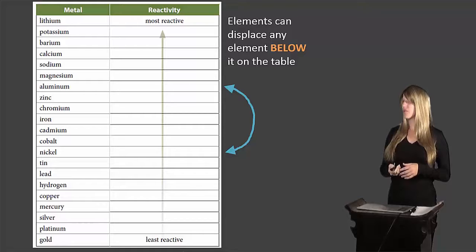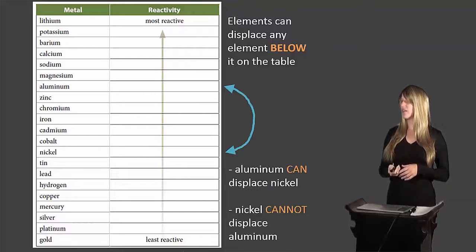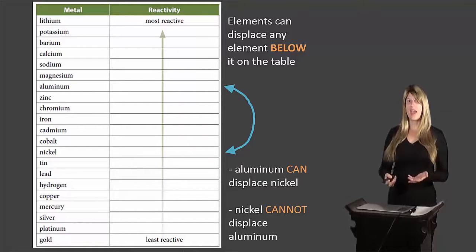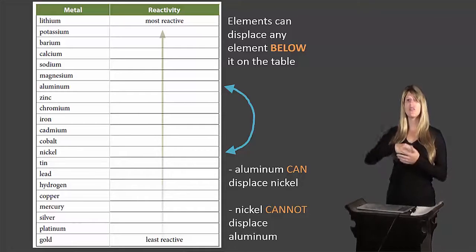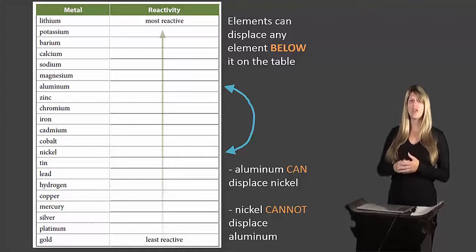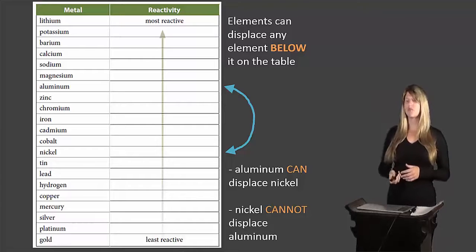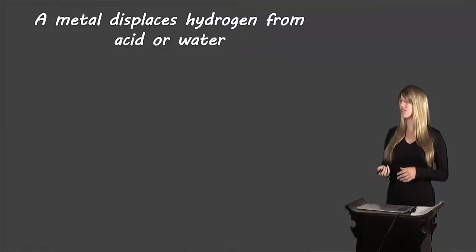For example, looking at aluminum and nickel: aluminum can displace nickel because nickel is below it on the reactivity series. But nickel cannot displace aluminum because aluminum is above. An element can only displace elements below it on the reactivity series.